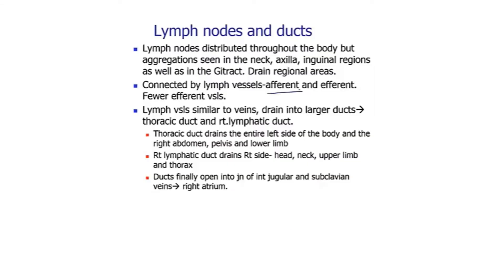Now the lymph nodes, which we have already done — this is just a revision. Lymph nodes are distributed throughout the body and are seen as aggregations in the neck, axilla, inguinal regions, as well as in the GI tract, and drain regional areas. We have afferent lymphatics coming in and efferent lymphatics going out — afferents are more numerous and efferents are one or two coming out of the lymph node.